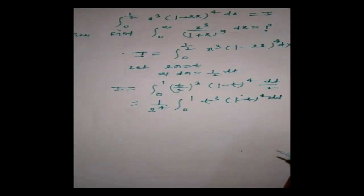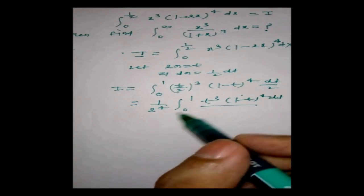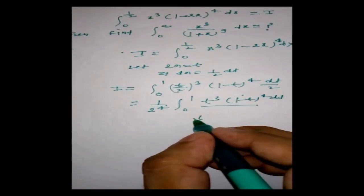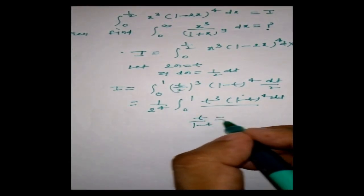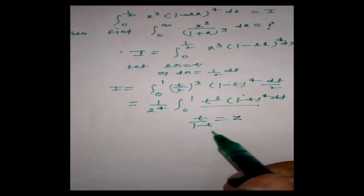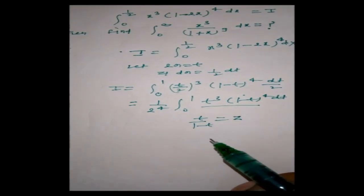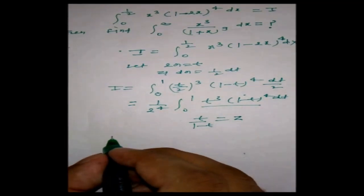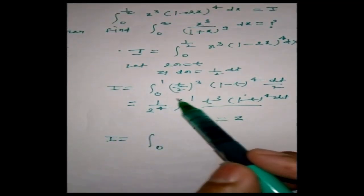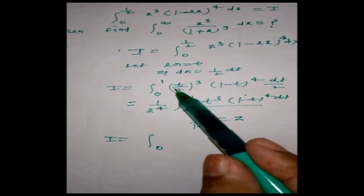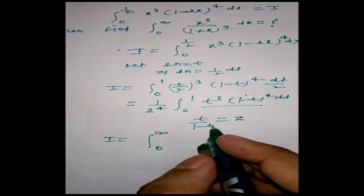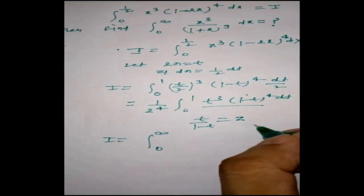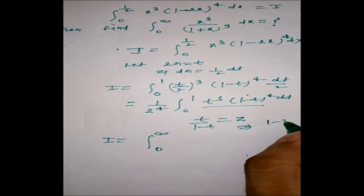Now we need the upper limit to go to infinity. So we apply a second substitution: let t/(1 minus t) = z. When t = 0, z = 0; when t = 1, z tends to infinity. So the limits become 0 to infinity.